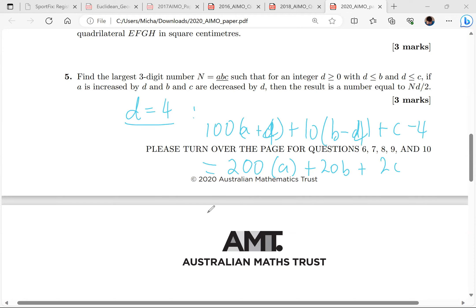Is that what the r thing is? So here we get 100a plus 10b plus c equals 400 minus 40 minus 4.